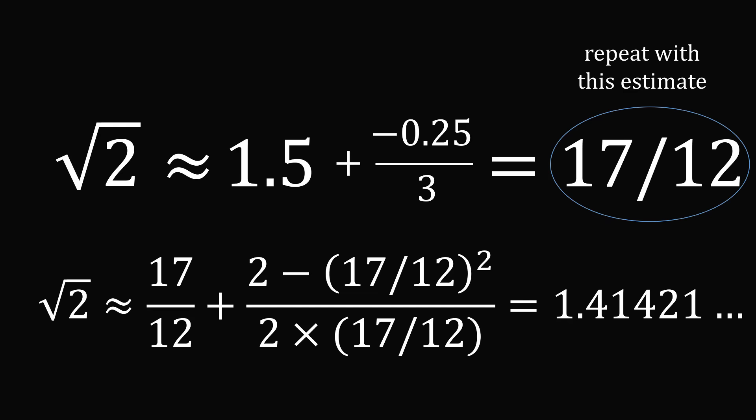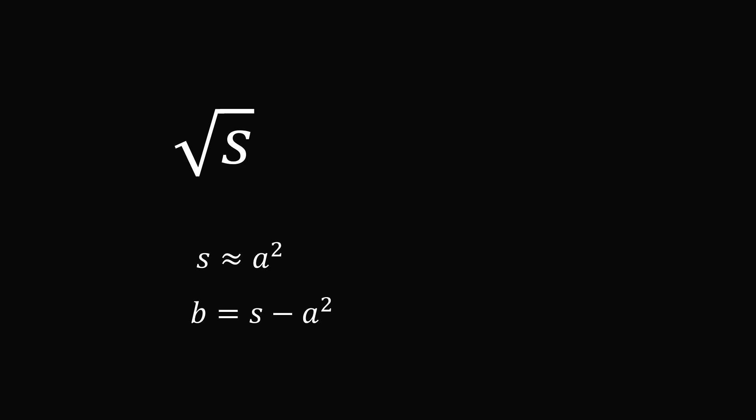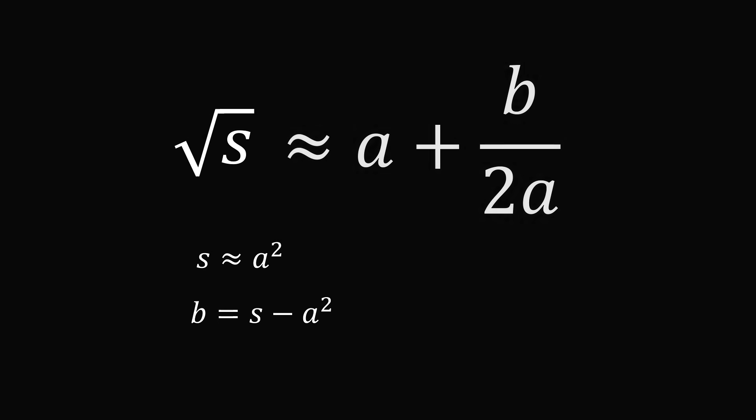You might be wondering why this method works and how ancient civilizations could have come up with this process. Let me provide a little visual intuition. To get started, I want to write down the algorithm in algebraic terms. Let's say you want to take the square root of a number s. You first find the closest square number, so s is approximately equal to a squared. We also write b to be equal to the difference of s and a squared. The Babylonian algorithm states that the square root of s is approximately equal to a plus b divided by 2a.